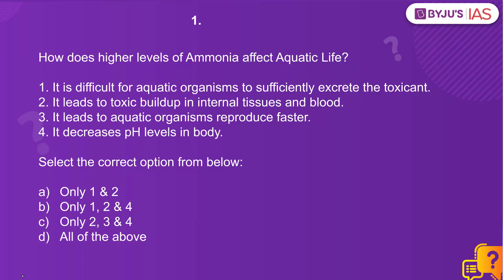Yes, because of higher levels of ammonia, it is difficult for aquatic organisms to sufficiently excrete the toxicant, and it does lead to toxic buildup in internal tissues and blood. But we don't know whether it leads to aquatic organisms reproducing faster — there is no such research. And it does not decrease; instead, it increases the pH level in the body. So statements three and four are wrong, statements one and two are correct. A is the right answer.